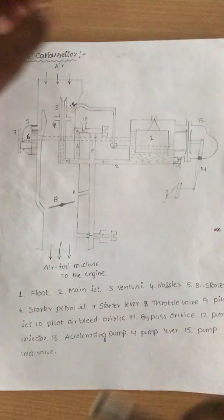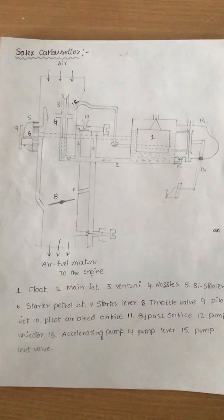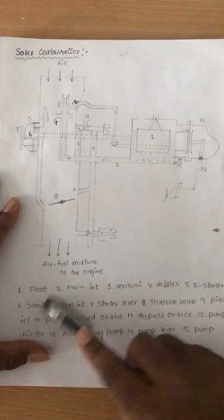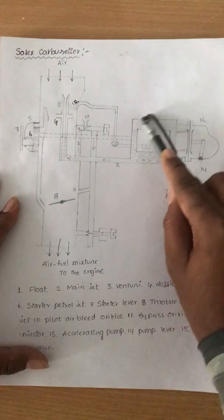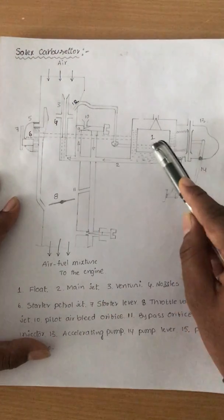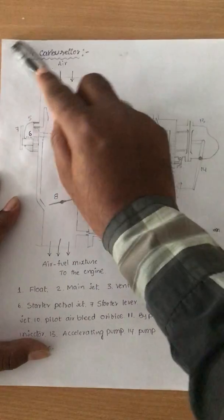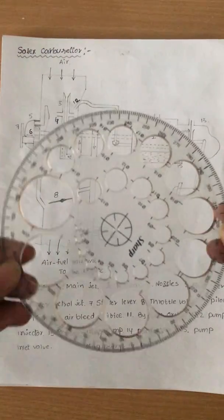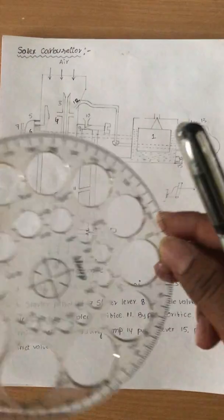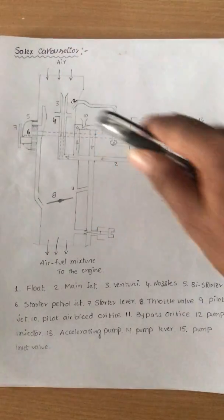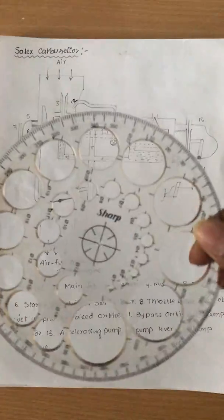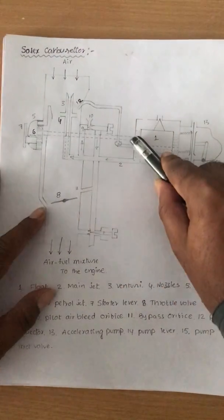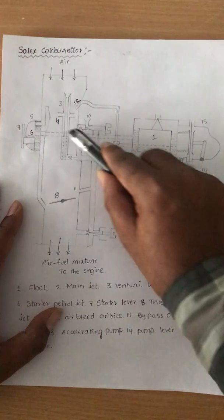The first topic is cold starting and warming. This is the float chamber; this is the float, and this is the main jet. The Solex carburetor has a unique feature called a by-starter. A by-starter is something like a pro-circle — it has a number of holes on it. Number seven is the lever. When the driver pulls the lever, the maximum diameter of the by-starter engages the line which connects to the float chamber, allowing the maximum amount of fuel to enter.